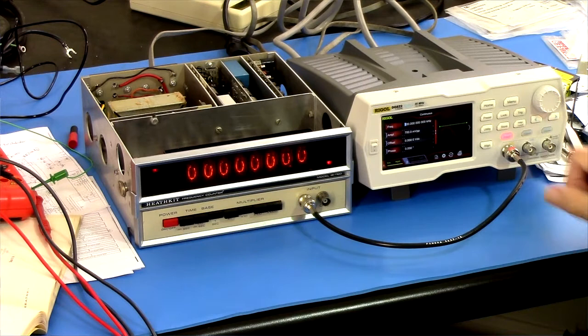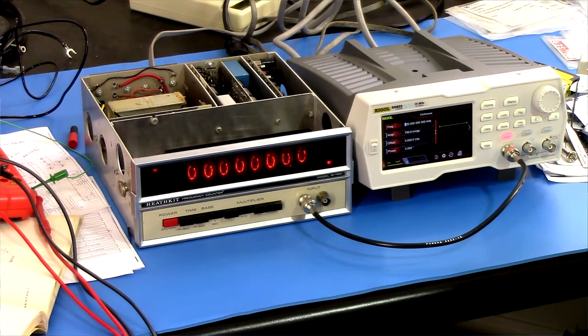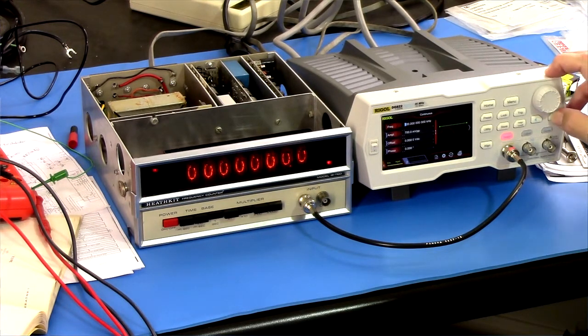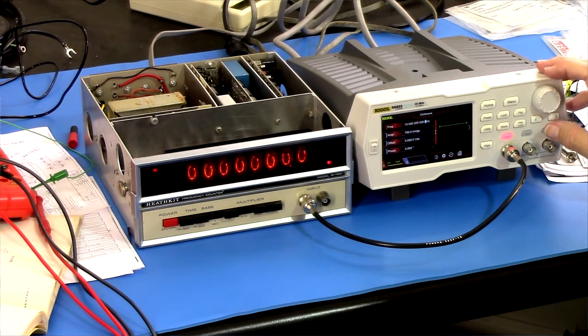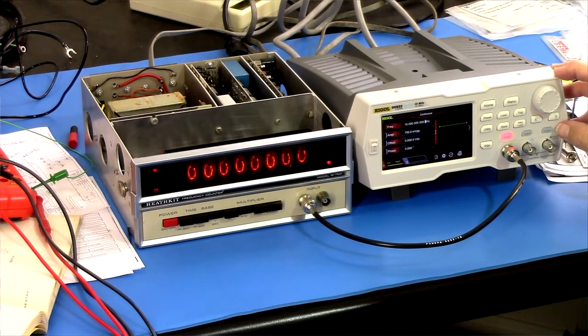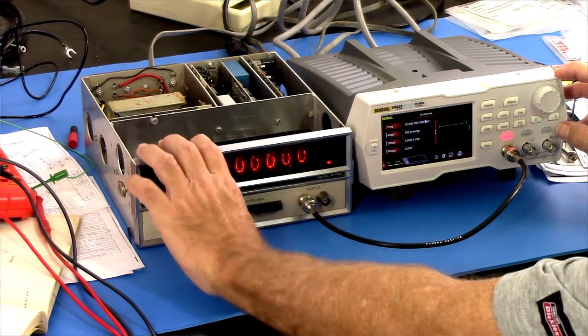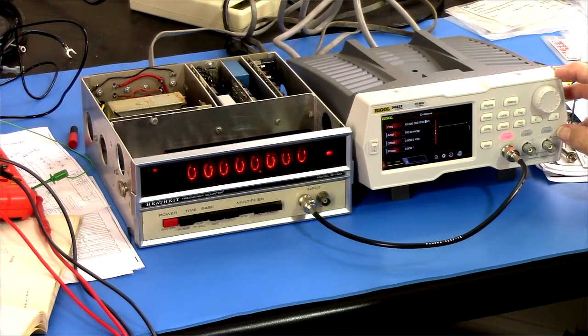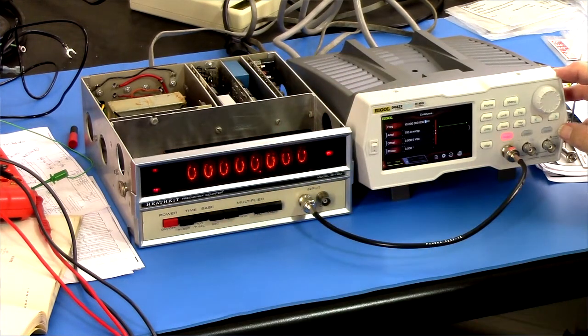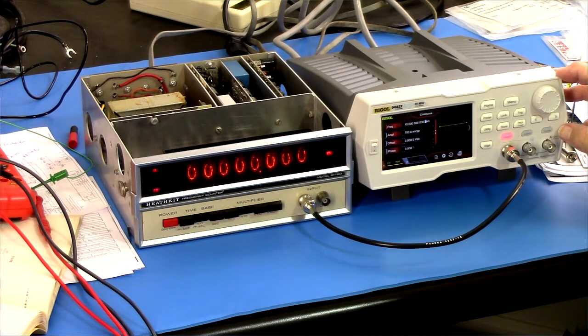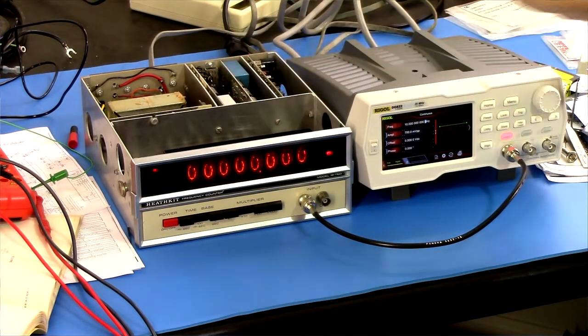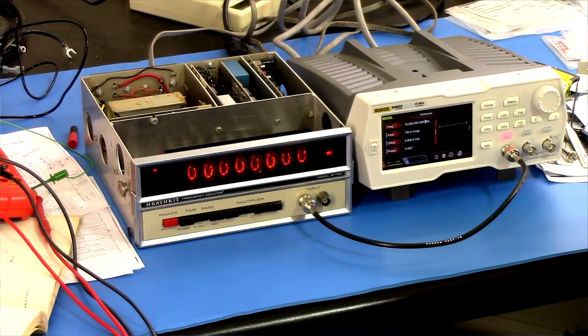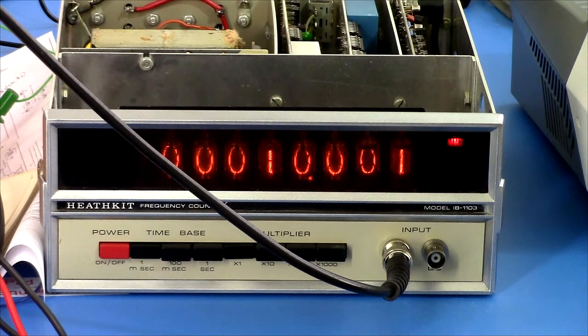I'm going to go to 10 kilohertz and see what happens. No that's the wrong way. There's 10 kilohertz. Still nothing. So we've still got a problem with the multiplier board apparently. But I should be able to adjust the time base in any case. Time base adjustment.